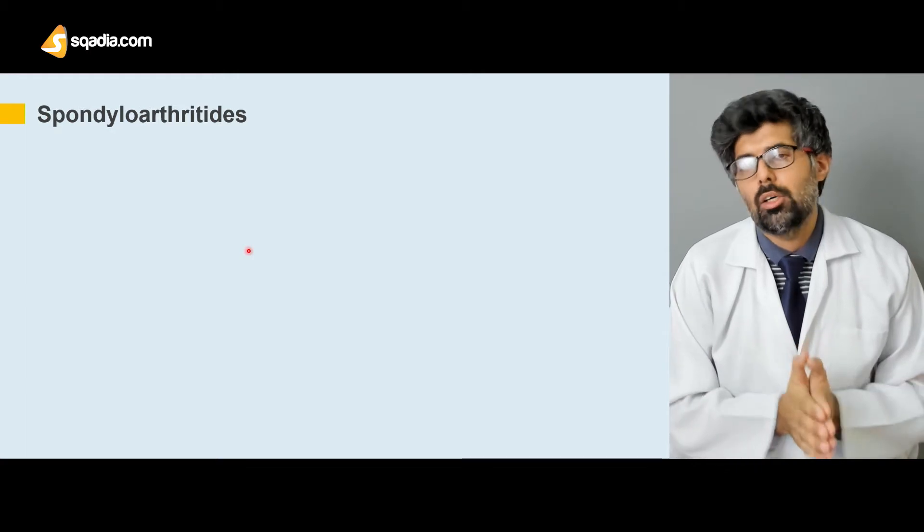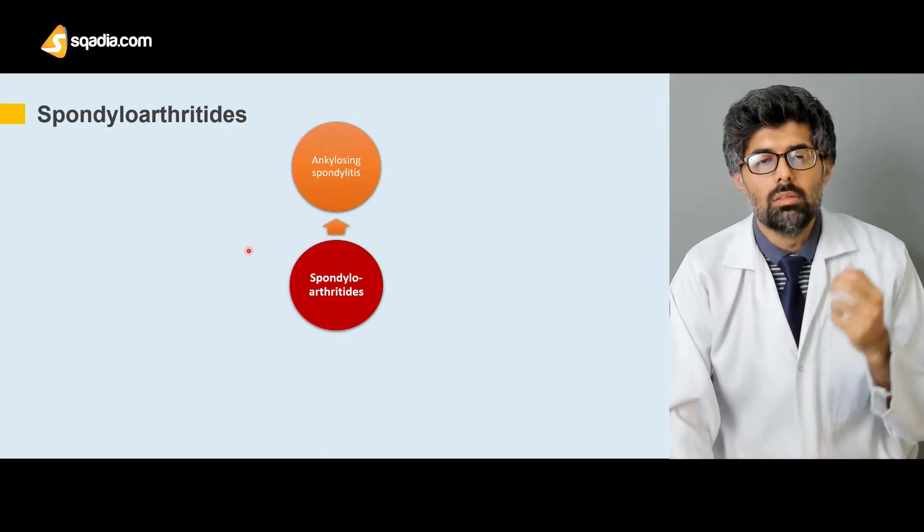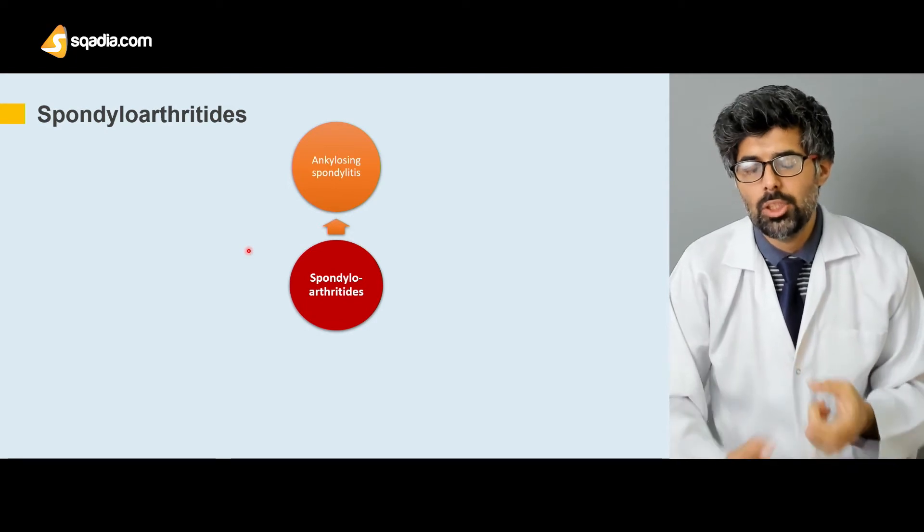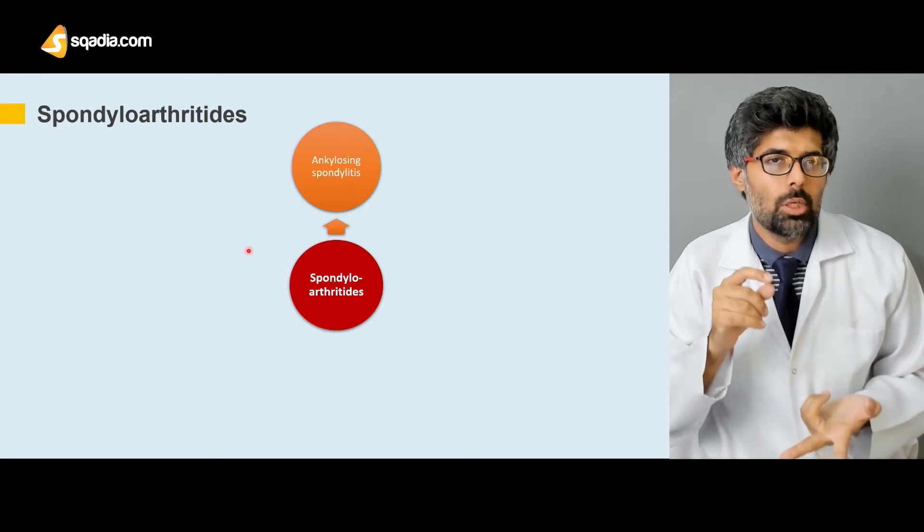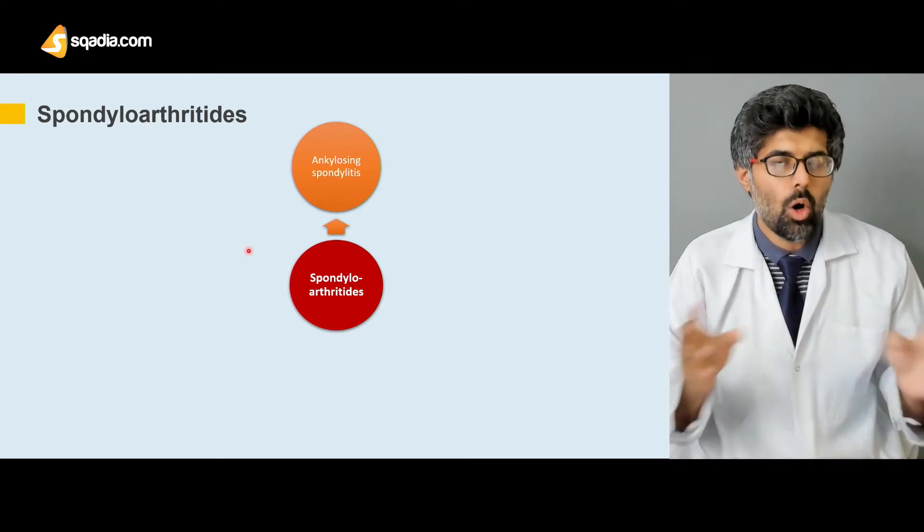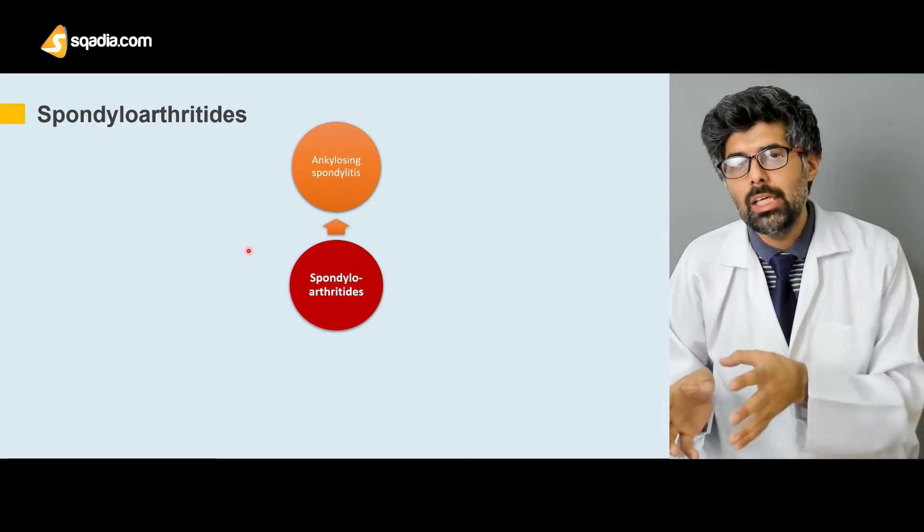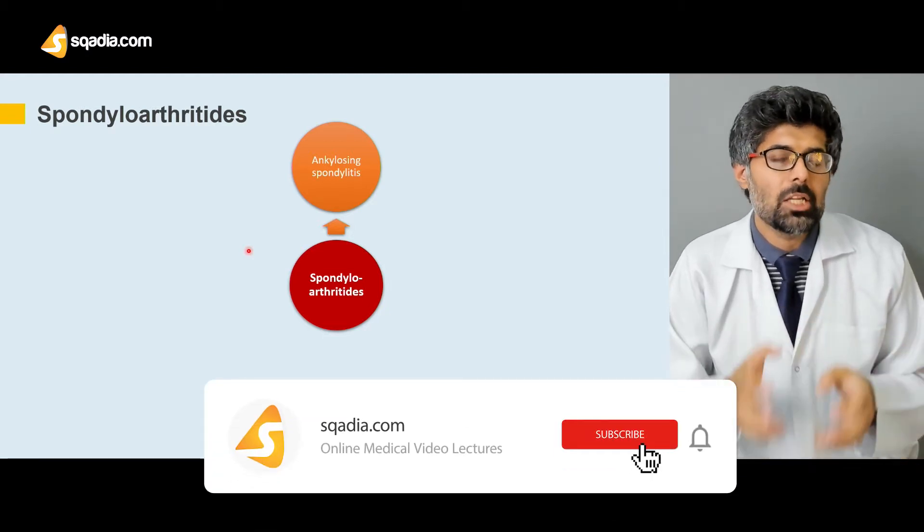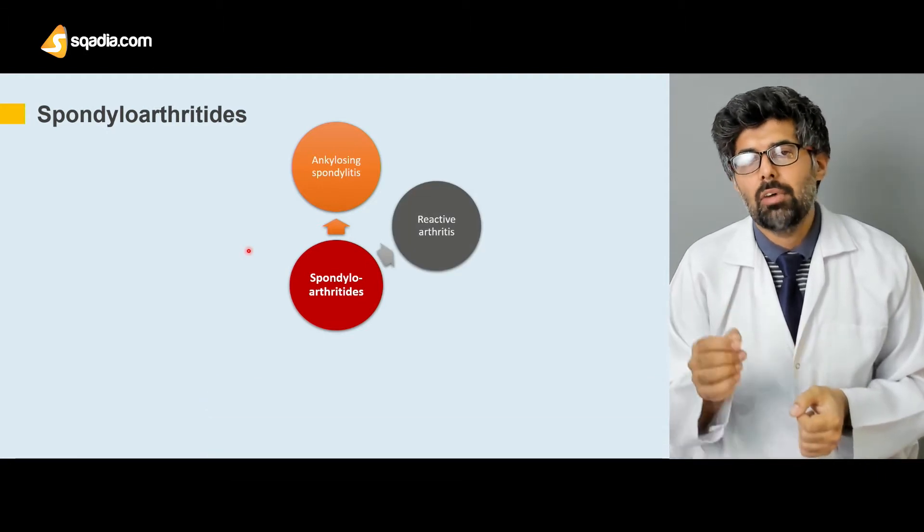Now let's talk about what are spondyloarthritides. These are usually expressed as ankylosing spondylitis. This is the most common spondyloarthritis. It is found in about 40 percent of all patients with spondyloarthritis and is the one that is usually found in both the white population and in the Asian population.